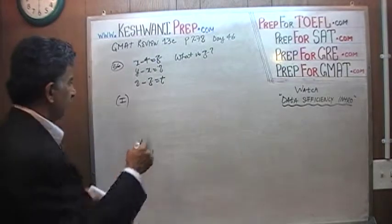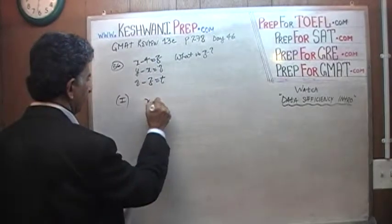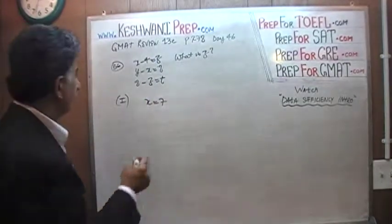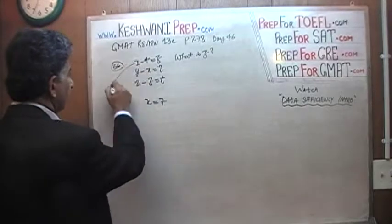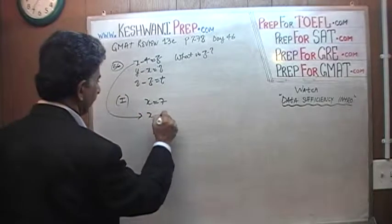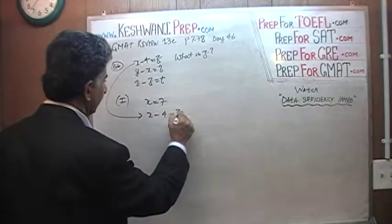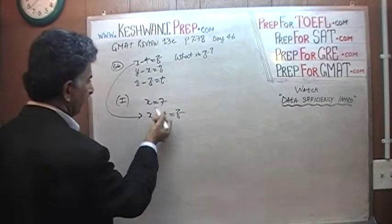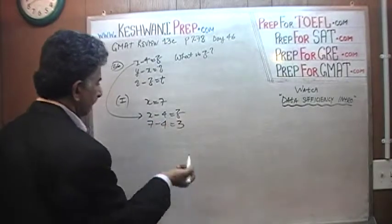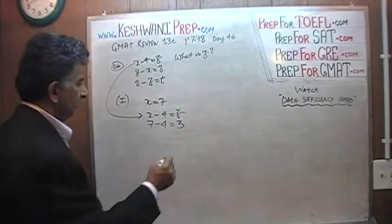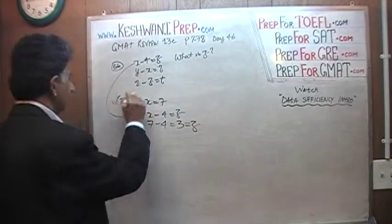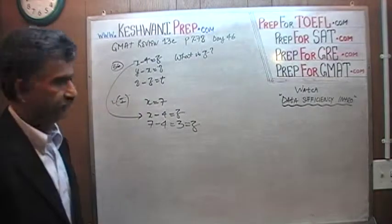If x equals 7, the first equation tells us x minus 4 equals z, so it's just 7 minus 4 equals z, which gives z equals 3. The first statement is of course sufficient.